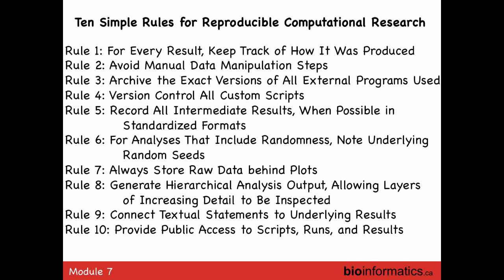Archive the exact version of all external programs used. If you need a specific version of Python or Perl, keep a copy so that someone a year later who tries your experiment can use the same version. Record all intermediate results in a standardized format when possible — though that's hard because bioinformatics loves to invent and modify formats. GFF, for example, has many versions, and not knowing which version was written can cause problems downstream.